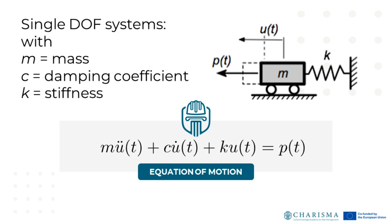A single degree of freedom system can be modeled using the so-called equation of motion, which can be derived by means of known mechanical principles, usually Newton's laws, or by means of analytical mechanics and so-called energy methods. In its simplest form, it equates the internal forces — inertial, damping, and elastic —